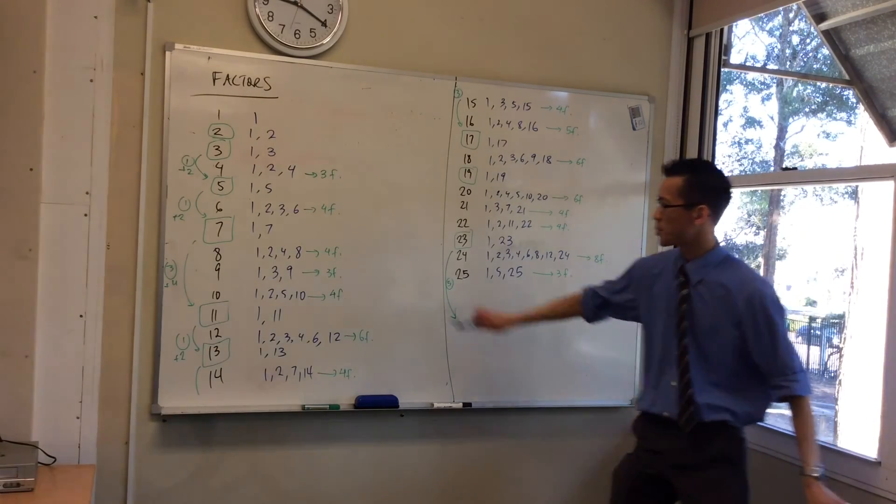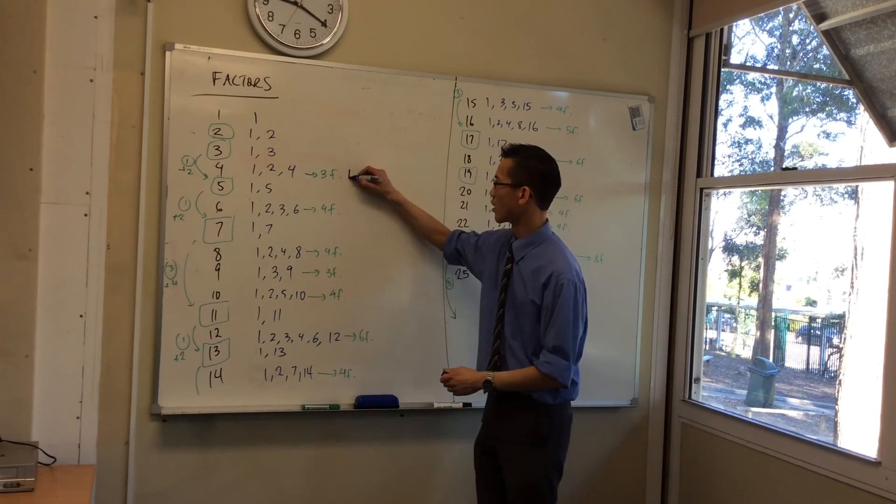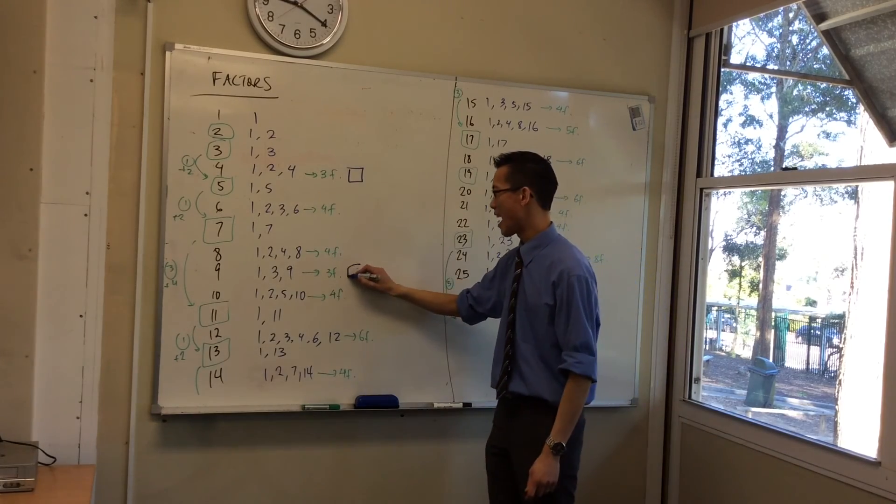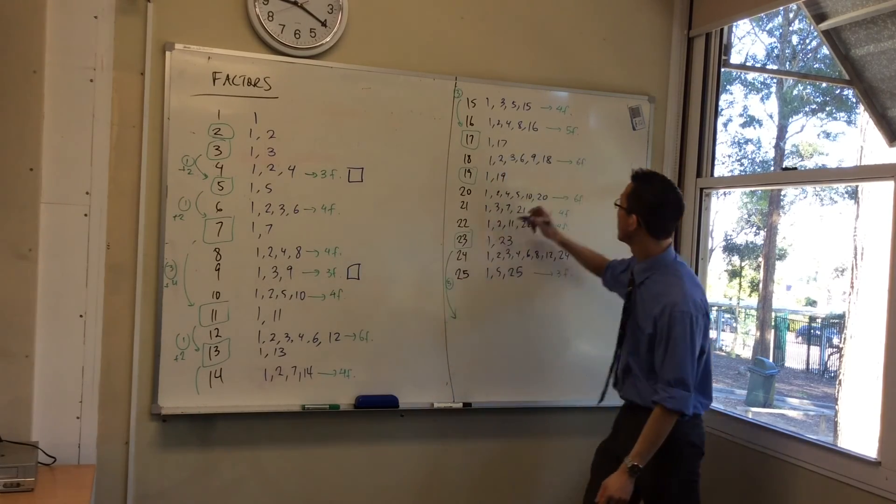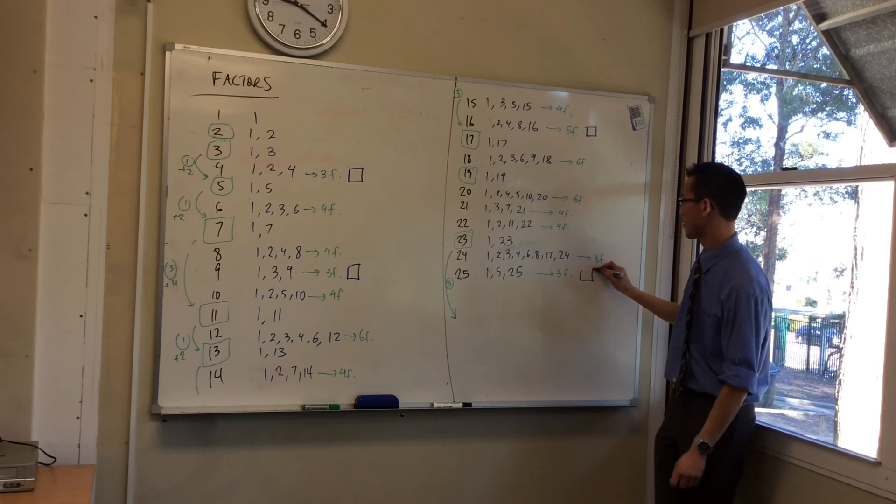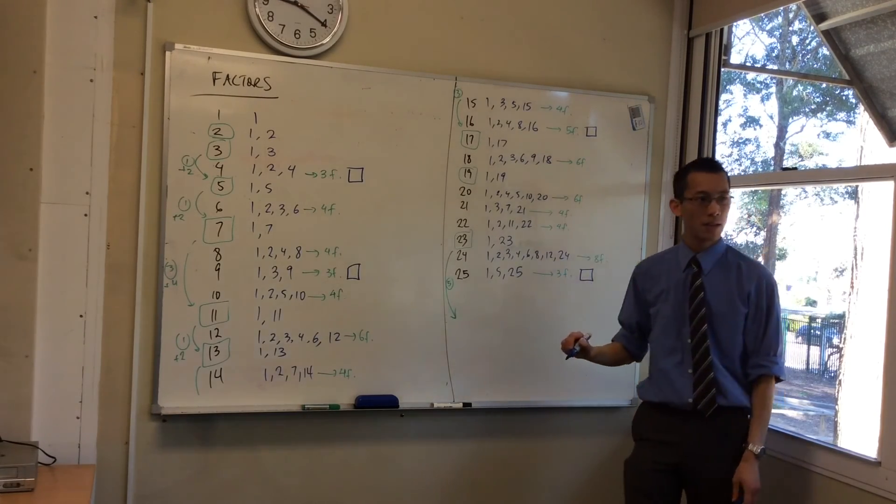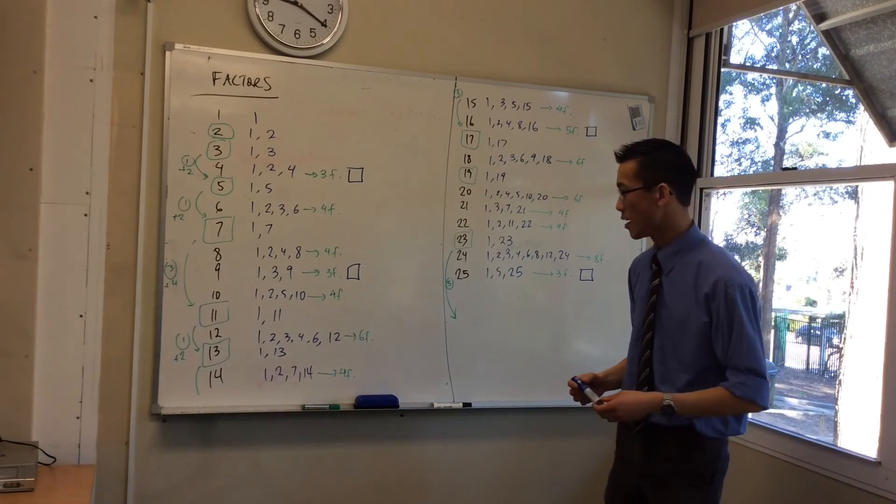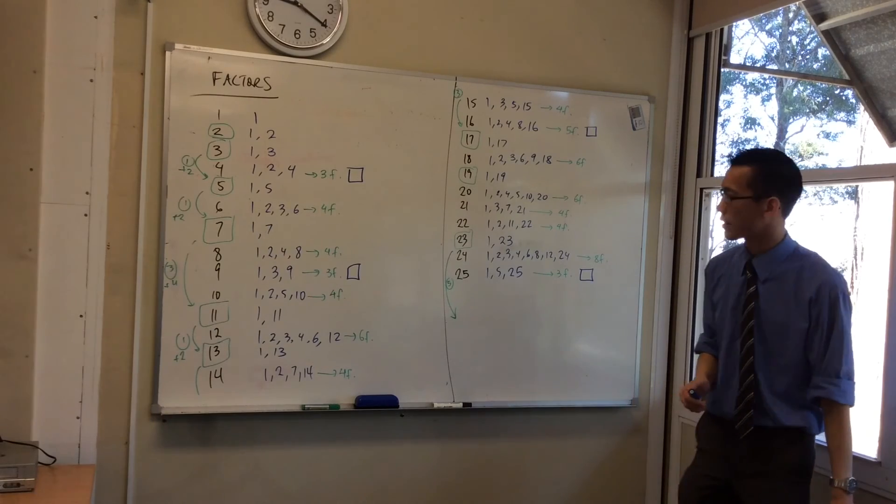All square numbers. Yeah, I'm gonna draw a square. Okay, all square numbers have an odd number of... Where am I here? Have I missed any? Did I get them all? They all have an odd number of factors. Everything else including the primes have an even number of factors.